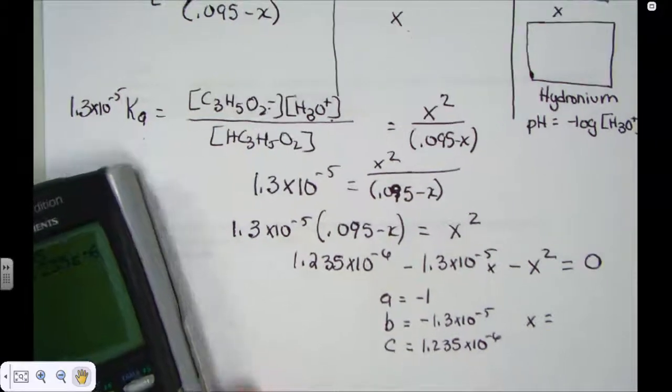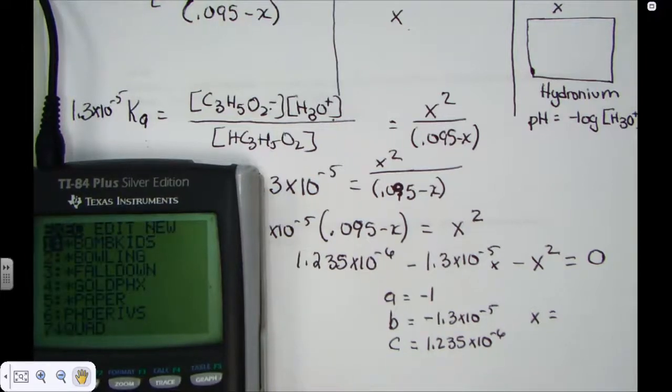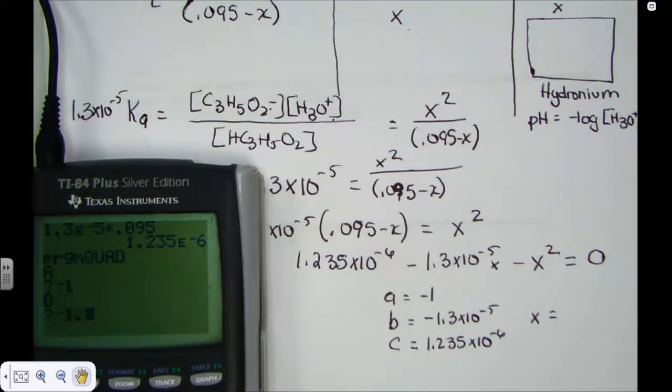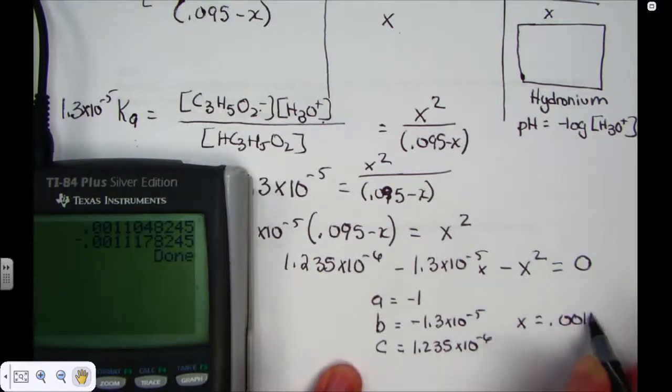Let's pull out x. Remember, x is representing the concentration of the hydronium ion. So I'll go to my quad program. And for the letter a, we type in negative 1. For the letter b, it's negative 1.3e negative 5. And for the letter c, 1.235e negative 6. One of our answers comes out negative, which we know makes no sense. There's no such thing as negative concentration units. So x comes out to be 0.0011. And that's molar units.